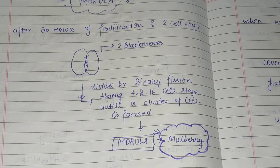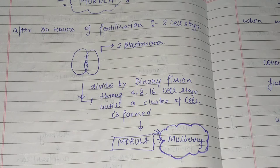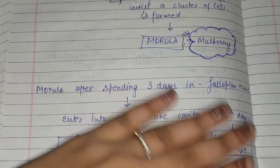Morola resembles a mulberry — that is where the name comes from. In Morola there are clusters of many cells. After spending 3 days in the fallopian tube, the Morola is still within the fallopian tube.